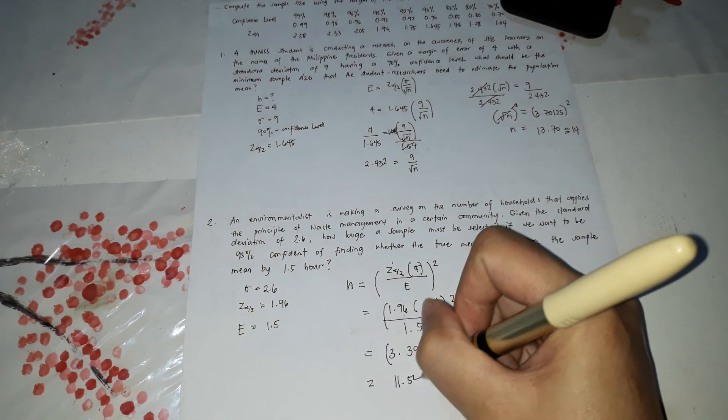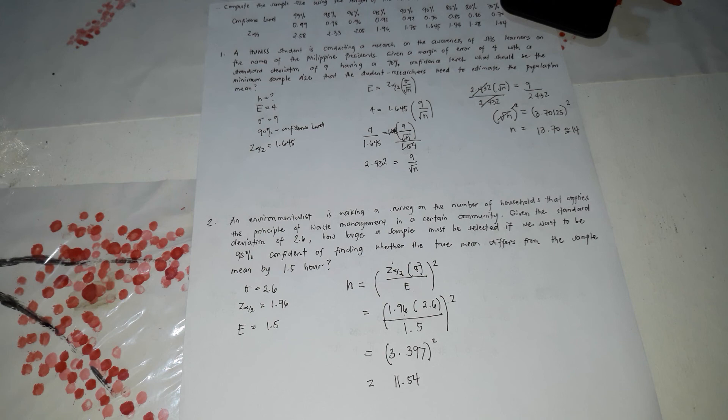11.54, which means that the number of households should be 11.54 or approximately equal to 12 households.